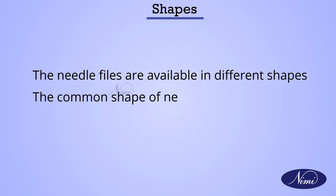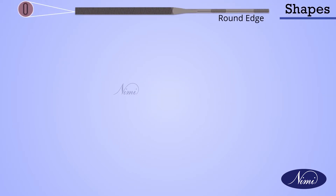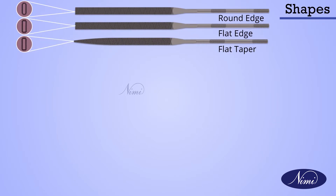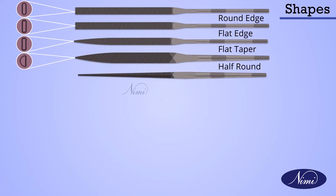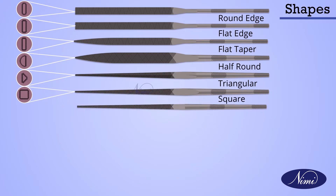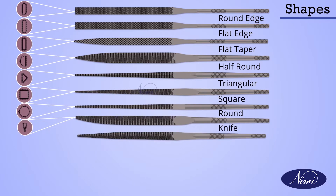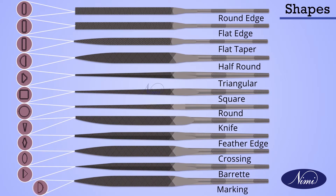The common shapes of needle files are: round edge, flat edge, flat taper, half round, triangular, square, round, knife, feather edge, crossing, barret, and marking.